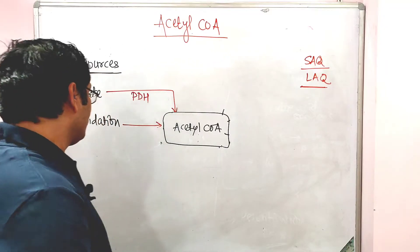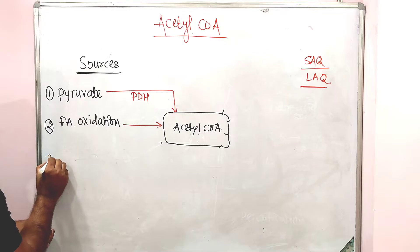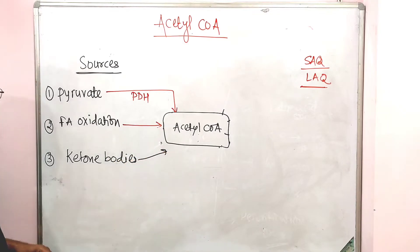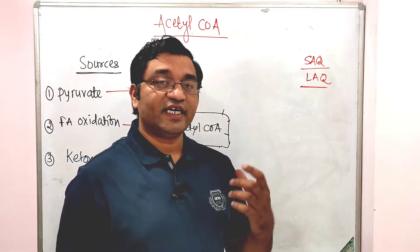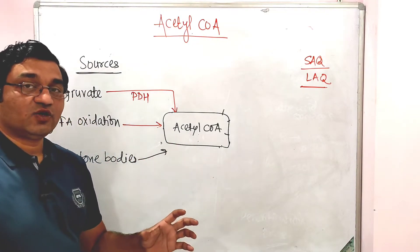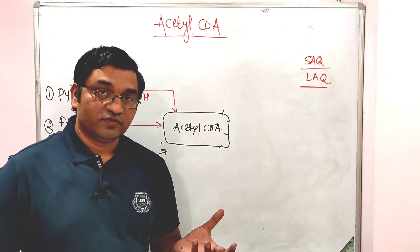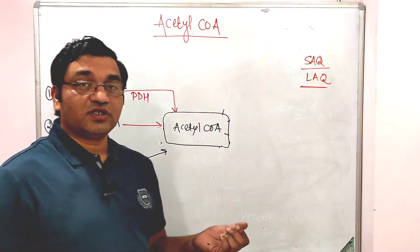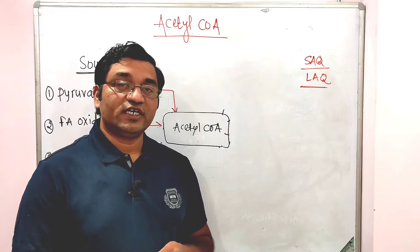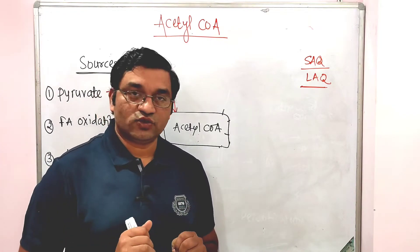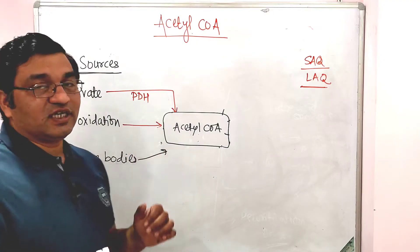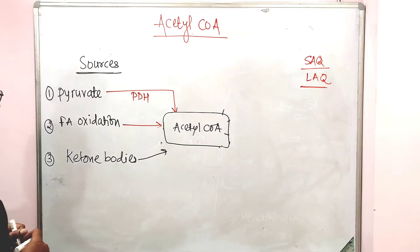The third important source is ketone bodies. The two important ketone bodies are acetoacetate and beta-hydroxybutyrate. In ketolysis, ketone bodies are converted into acetyl coenzyme A and utilized for energy production, especially in cases of starvation and diabetic ketoacidosis — two important conditions related to ketone body production.